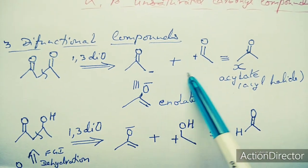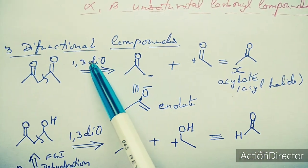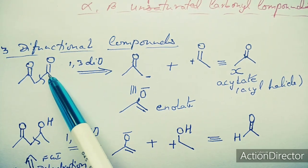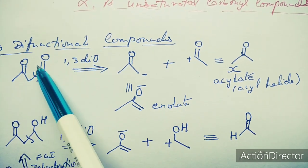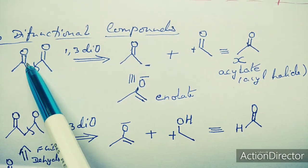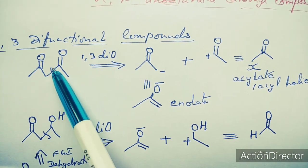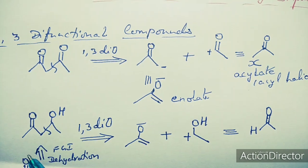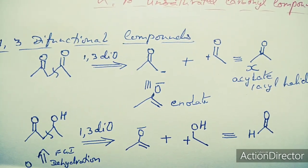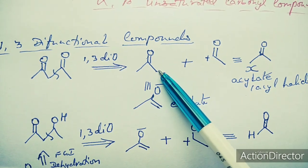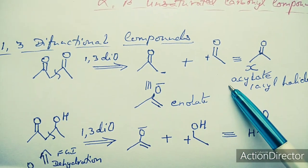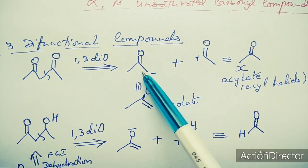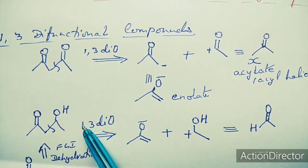This type of disconnection in reverse will lead to the formation of this target molecule. So this is again a carbon disconnection taking into consideration two functional groups. Here it is the dicarbonyl and the level is 1,3. So it is a 1,3-difunctional C-C disconnection, forming an enolate as the synthetic equivalent and the other is the acylate — it can be an acyl halide, it can be an ester. So in the presence of a base, this will react to give us this target molecule.